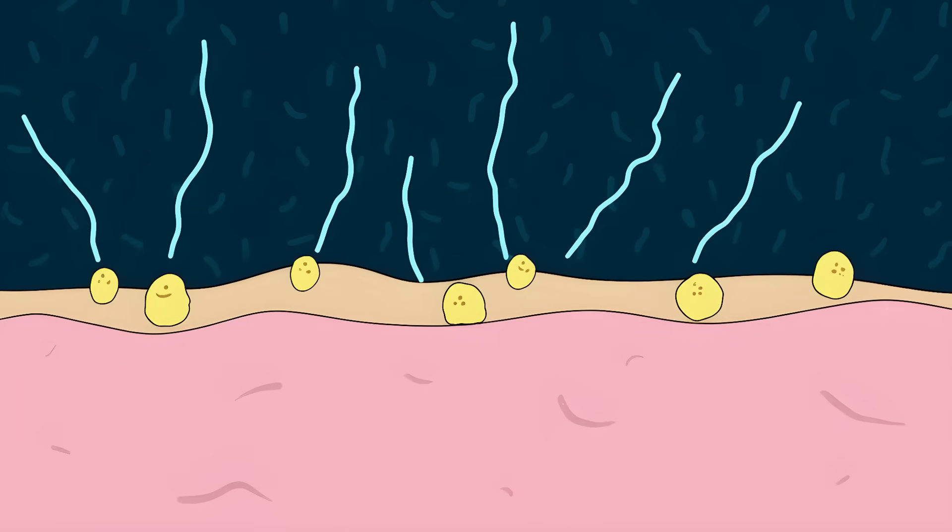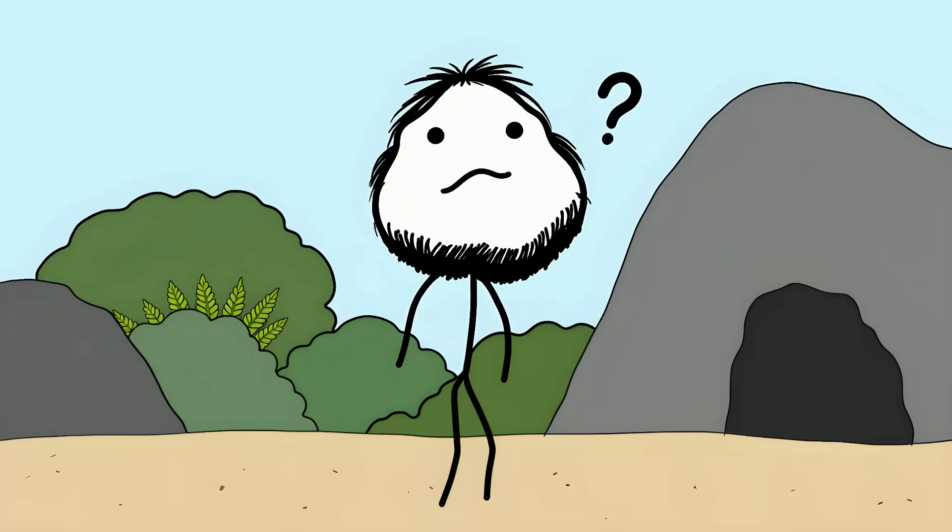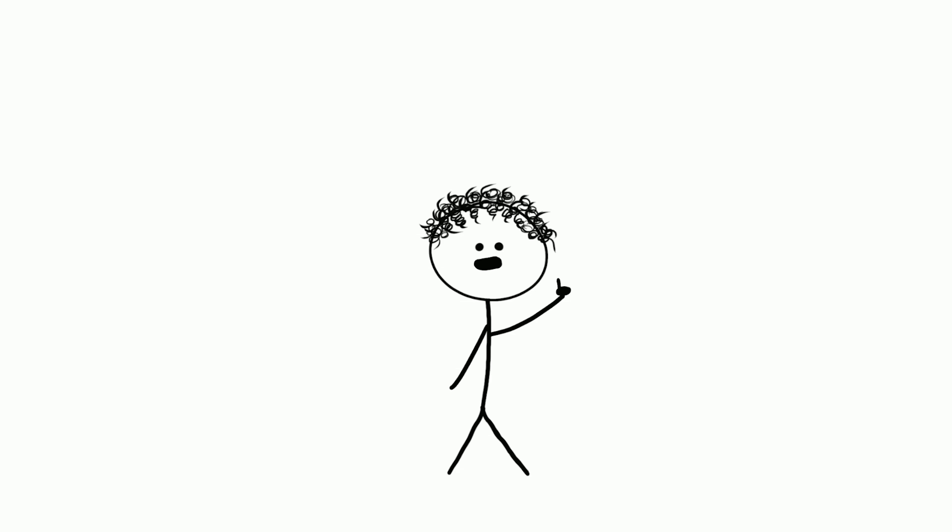Scientists still can't fully explain why this happens. They know it starts with sensitive nerve endings sending signals to your brain, but the reason a simple touch makes us lose control with laughter remains unclear. One theory is that it's an ancient defense mechanism. The light, feathery feeling is similar to bugs or parasites crawling on your skin.